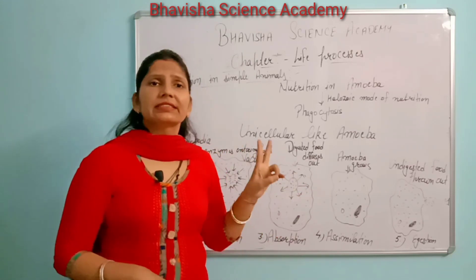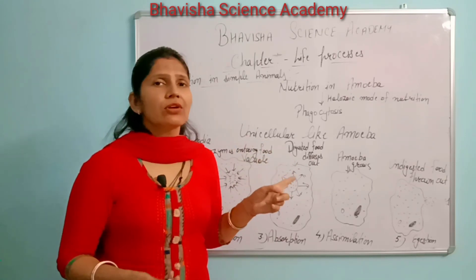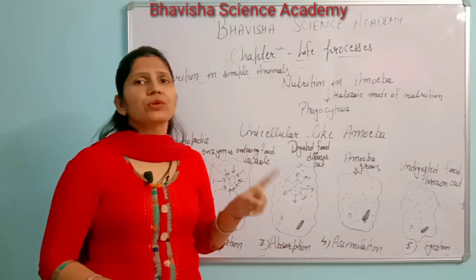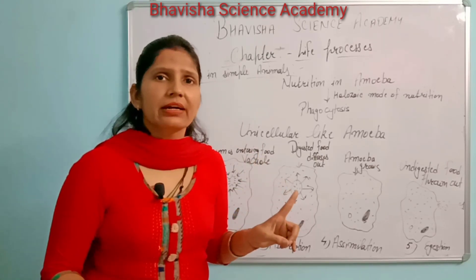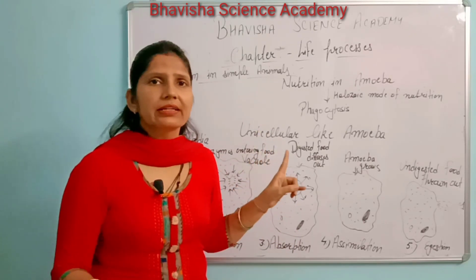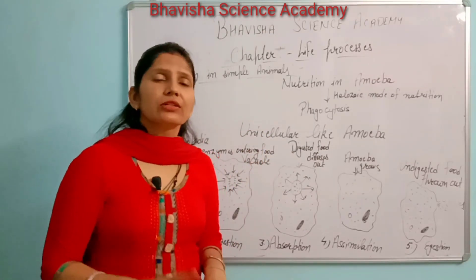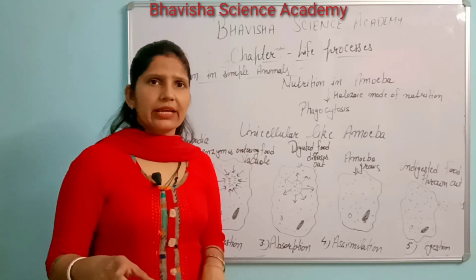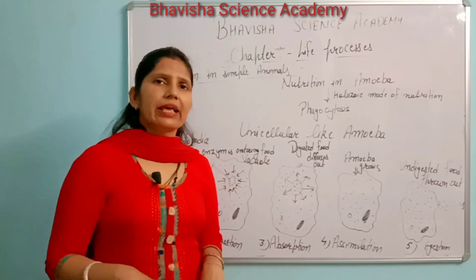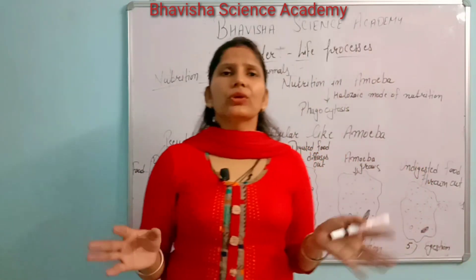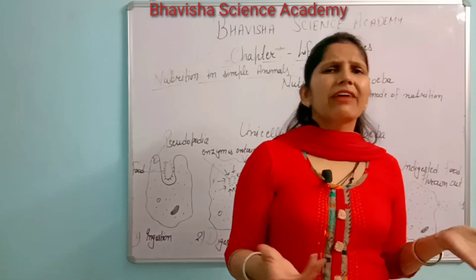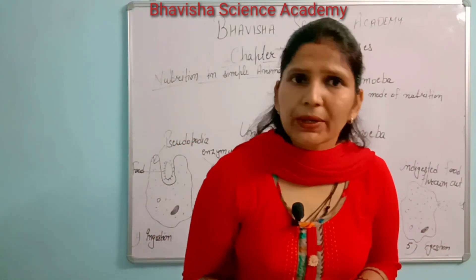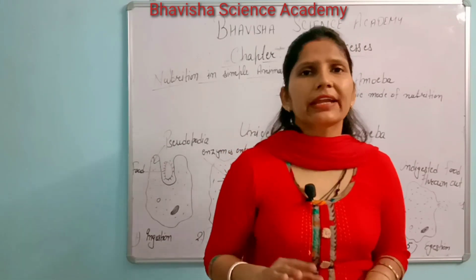First is unicellular — organisms made by only a single cell, like amoeba, paramecium, euglena, etc. Second is multicellular — organisms made by two or more than two cells. Everything we can see with our naked eyes is multicellular, because unicellular organisms cannot be seen by our naked eyes.